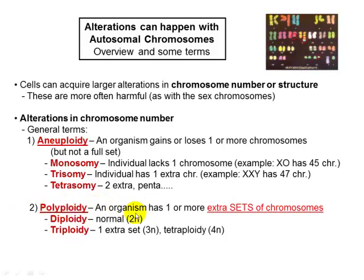A normal case for humans is diploidy, which is 2N — two sets of 23 chromosomes. If you have triploidy, you would have one extra set, so instead of 2N it would be 3N. Then if you have four sets, it can be tetraploidy. Something with '-ploidy' has to do with sets, while something like monosomy or trisomy — ending in '-somy' — has to do with one specific chromosome having more or less of that particular one.